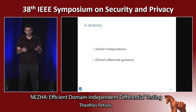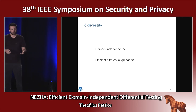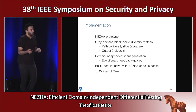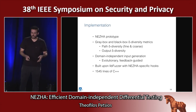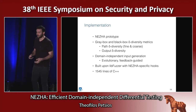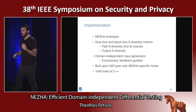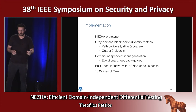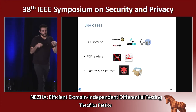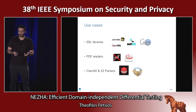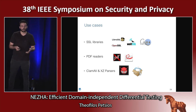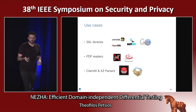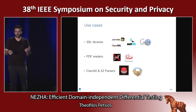I'm going to show you that this approach is actually domain-independent and can be efficient. To do so, we implemented a prototype named Neza. We implemented different gray-box and black-box delta diversity metrics, and built Neza extending LibFuzzer so that people can perform differential testing for semantic vulnerabilities and logic errors as well as crash-inducing bugs at the same time. We applied Neza in a bunch of different workloads to show it can find bugs and logic errors in real-world software — testing SSL libraries, different PDF readers, and different file format parsers.